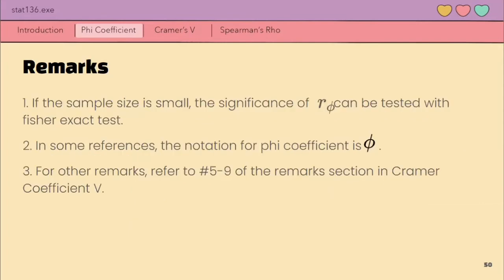If the sample size is small, we can use special exact tests. In other references din, denotation for phi coefficient is itong lowercase p lang. Unlike dito kasi for our discussion, we are going to use r sub lowercase p. For other remarks naman, refer to number 5 to 9 of the remark section in Cramer coefficient V.